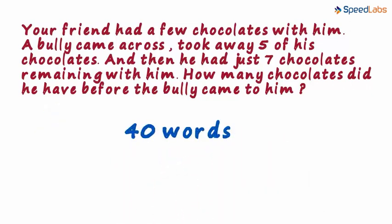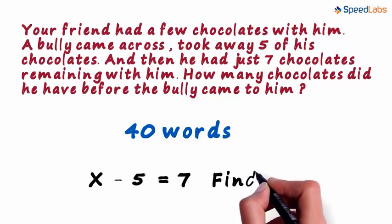Let's see if we can shorten the question a bit. Assume your friend had x chocolates with him. The bully took away 5 of his chocolates. So we subtract 5 from x. And after all this, your friend was left with 7 chocolates. This entire thing will then equal 7. Now all we have to do is find x.